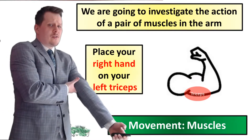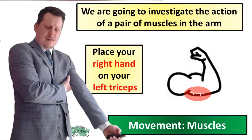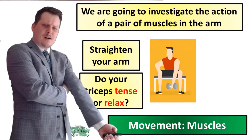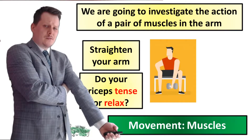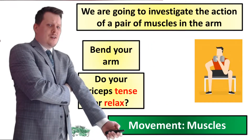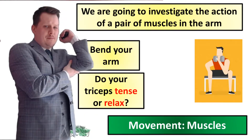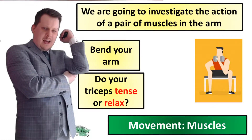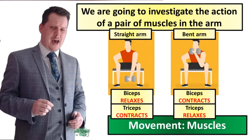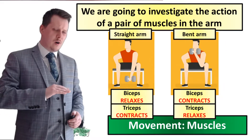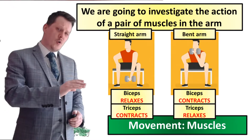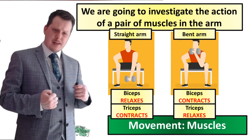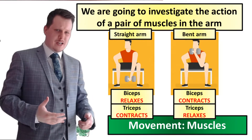Now place your right hand on your left tricep, which is underneath the bicep. With the arm as straight as you can get it, does the tricep feel tense and hard or relaxed and soft? The tricep is tense. Now if we bend our arm and feel the tricep again — is it still tense? No, it's become relaxed and soft. This is an example of an antagonistic pair, where one muscle does the opposite of another.